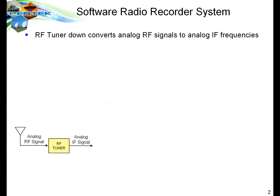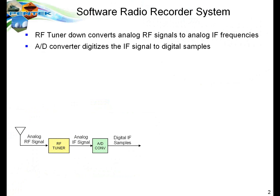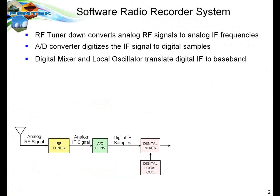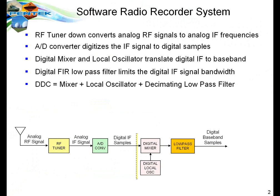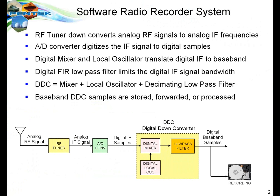Usually what we'll do first is take the antenna signal, which is at the high RF frequency, and go through an RF tuner which down-converts that signal to a lower frequency that we can digitize with an A-to-D converter. The A-to-D converter then produces digital samples of the IF signal. We then typically go through a digital mixer and digital local oscillator to translate the digital IF signal to baseband, and we filter it with a low-pass filter, giving digital baseband samples of the correct bandwidth. Those operations — the digital mixer, local oscillator, and filter — are traditionally called a digital down converter.